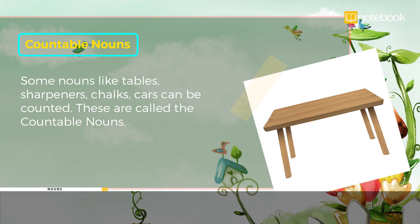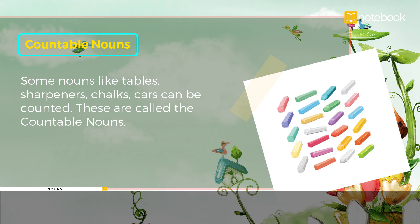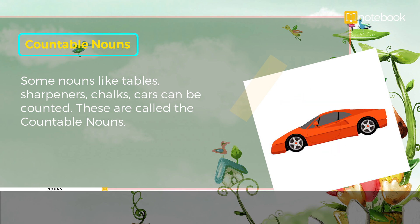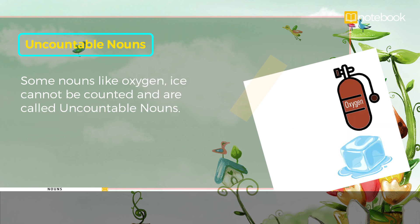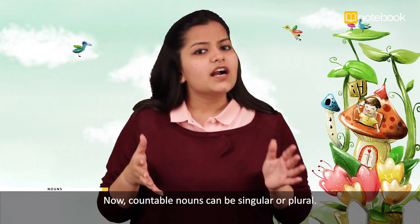Some nouns like tables, sharpeners, chalks, and cars can be counted. These are called countable nouns. Some nouns like oxygen and ice cannot be counted and are called uncountable nouns.